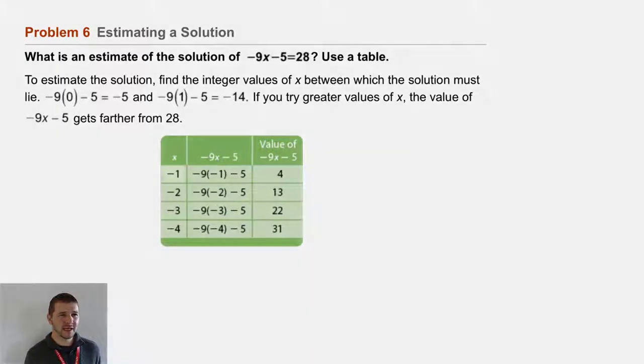As we substitute those in, first -1, we write -9(-1) - 5 and evaluate that, that's 4. We're looking for 28.